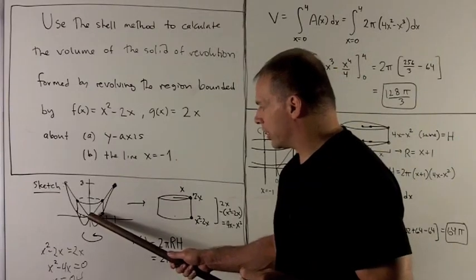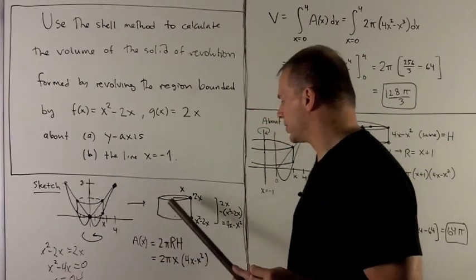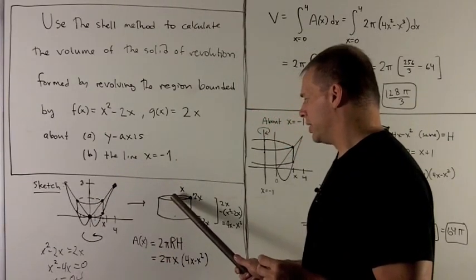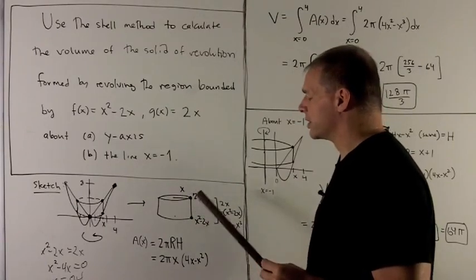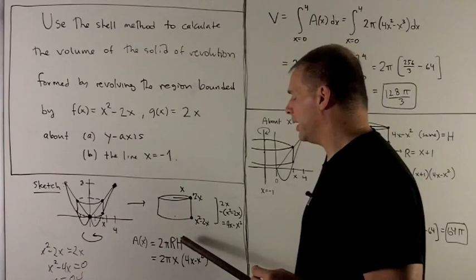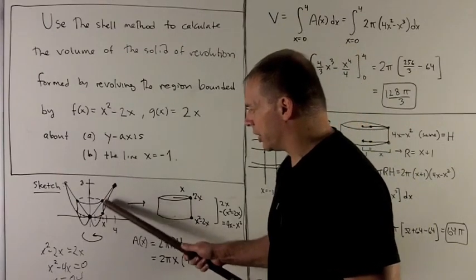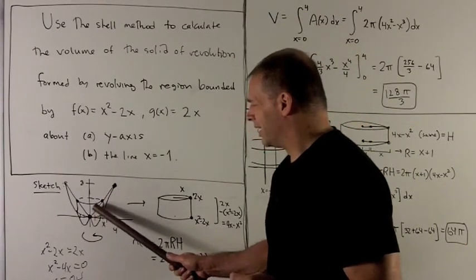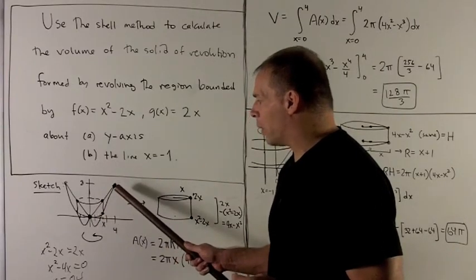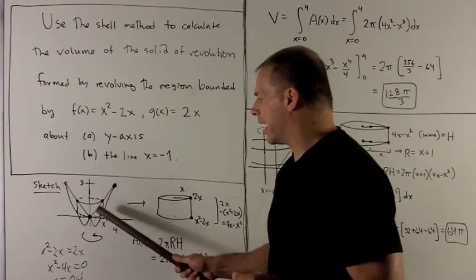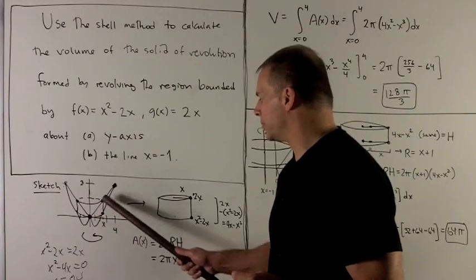For a cylinder, I need to know the radius and the height if I want to get the area. So here, we take a look at this cylinder here. We'll notice that the radius is just going to be how far we come out from x. So my radius is x.